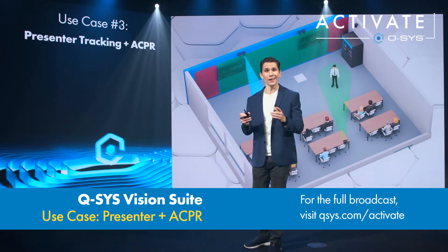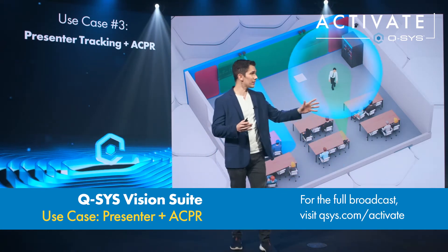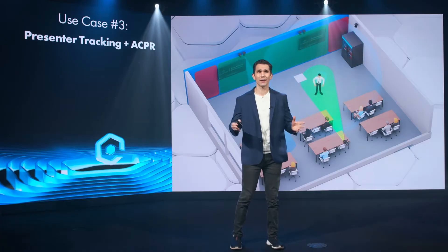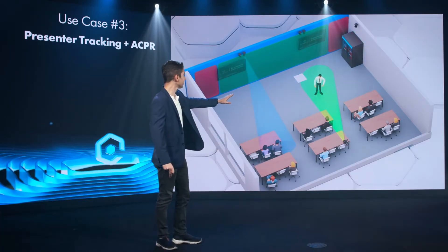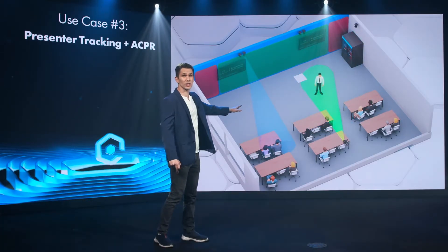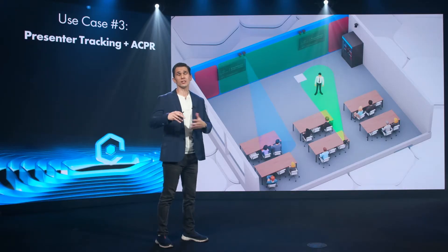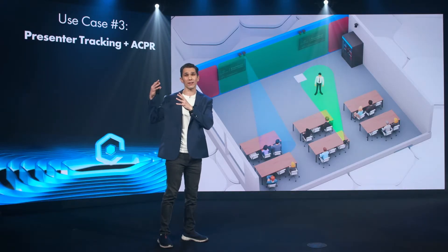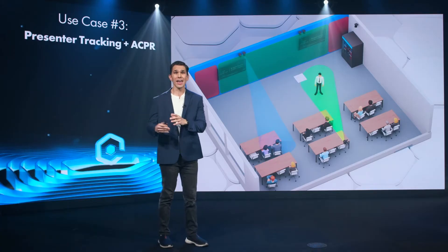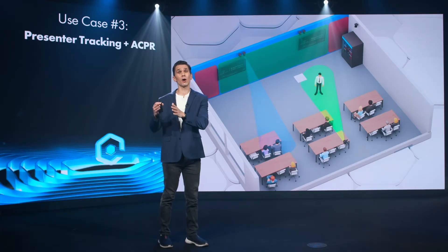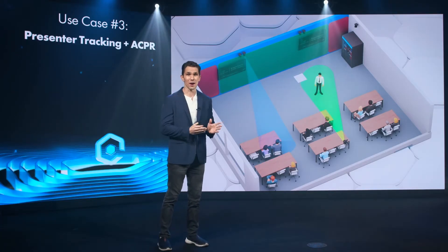This use case is going to start combining presenter tracking with ACPR, which Nate already covered. In this scenario, we've got our same presenter and somebody asks a question in the audience. The system uses audio data from the ceiling microphone to identify that somebody is talking and then trigger away from presenter tracking to ACPR.